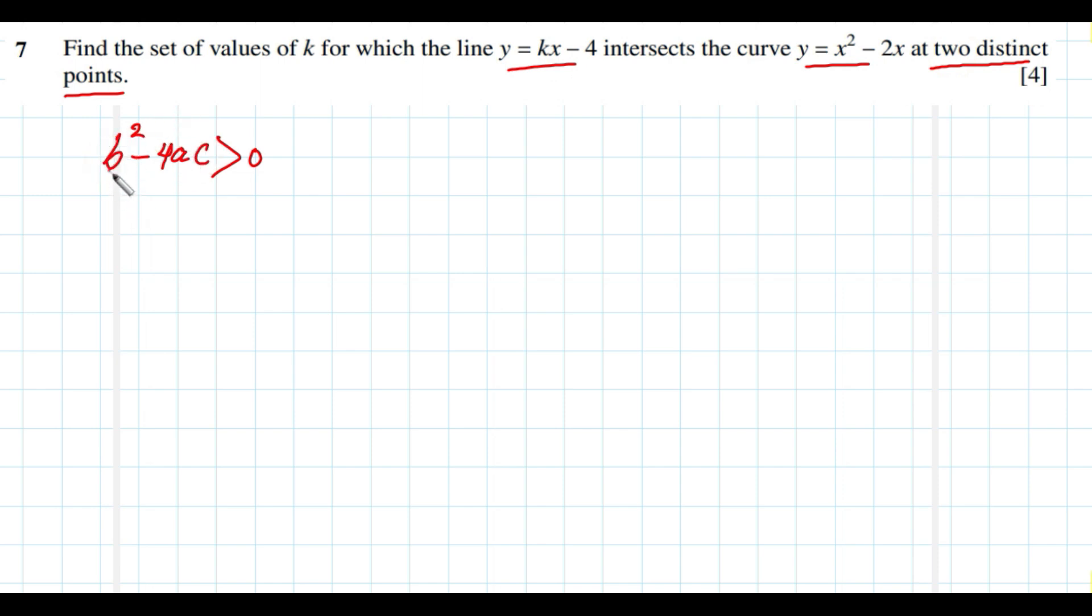The next step is to get the ABC coefficients. How to get the ABC coefficients? We need to produce the quadratic equation by combining the two equations. We know that at the intersection points, the y coordinate for the line is the same as the y coordinate for the curve. Therefore, you can say that kx minus 4 is the same as x squared minus 2x.